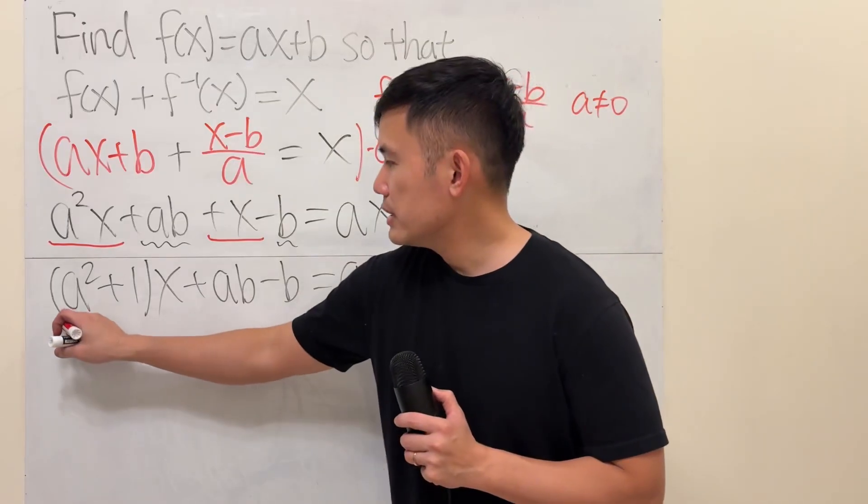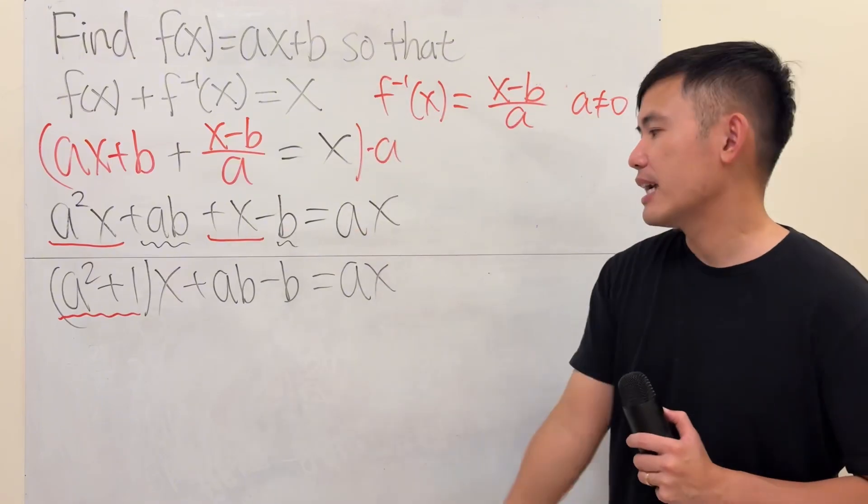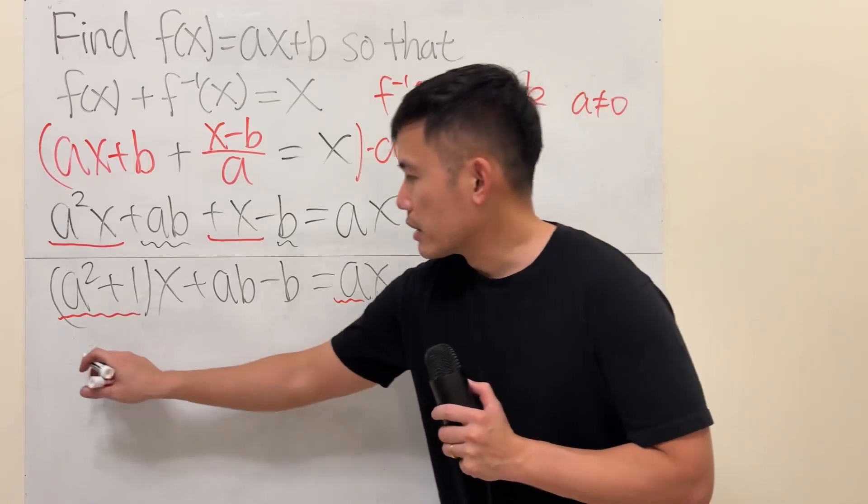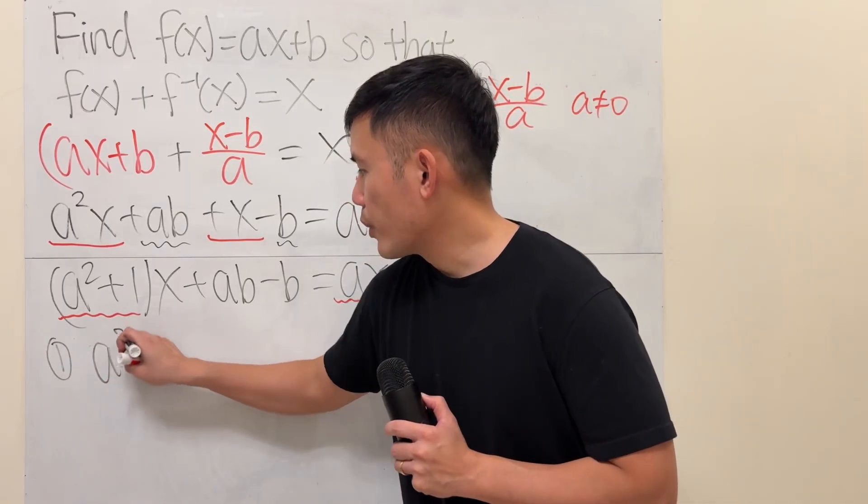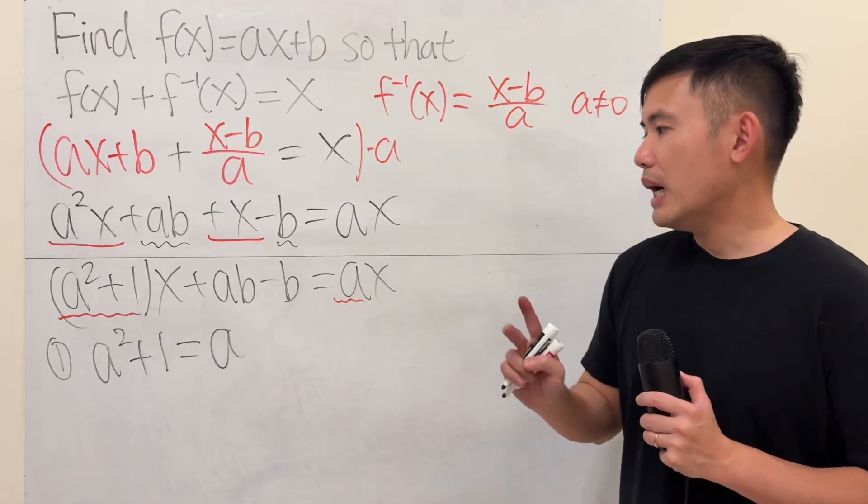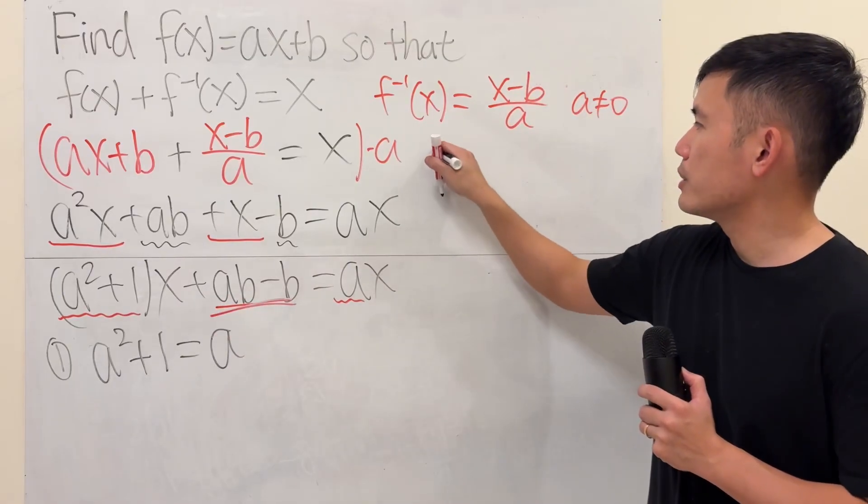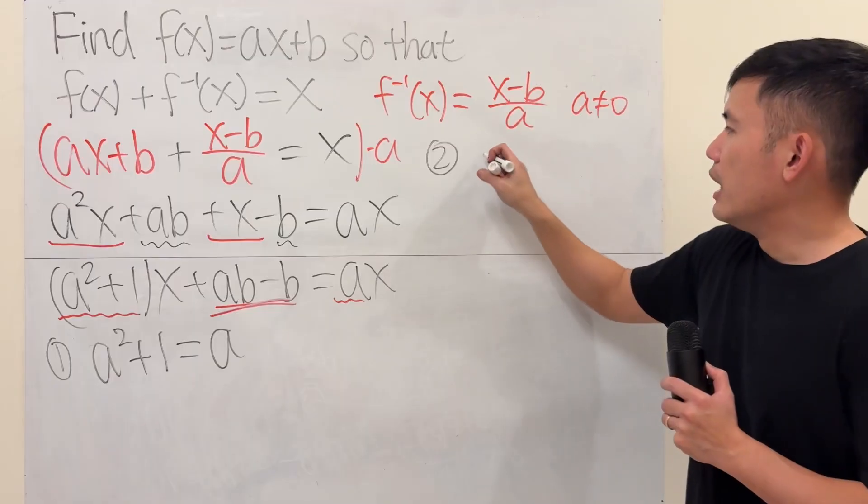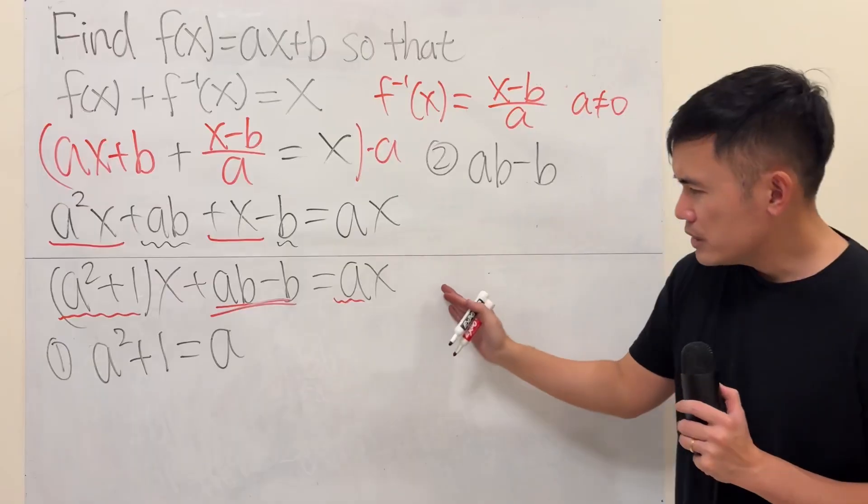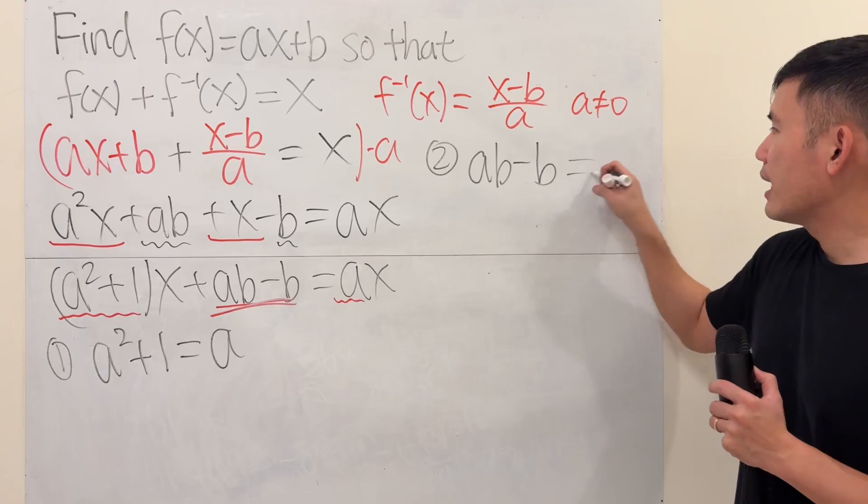Well, because we see that this is the coefficient of x on the left-hand side, that has to be the coefficient of x on the right-hand side as well. So, we have a condition. The condition is that a squared plus 1 has to be equal to a. We do have a second condition, which is this right here. ab minus b. This is the constant term on the left-hand side. But do we see any constant on the right-hand side? It's just 0. So, this right here has to be equal to 0.